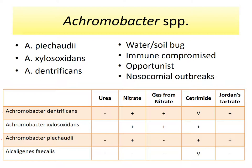The organisms Achromobacter piechaudii, xylosoxidans, and denitrificans are almost always seen in the immunosuppressed, but we do get nosocomial infections in patients who may not be otherwise immunosuppressed. This organism can be transmitted from person to person or from fomite to person via contact with contaminated liquids — including intravenous solutions, mouth rinse, or soap solutions. For example, a patient could be colonized and wash their hands as told, but soap solutions don't necessarily kill Achromobacter. If the patient comes in contact with that contaminated soap solution, it could lead to a nosocomial infection.